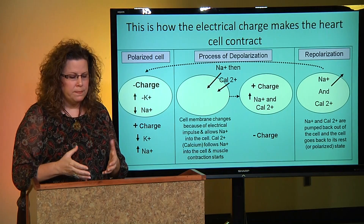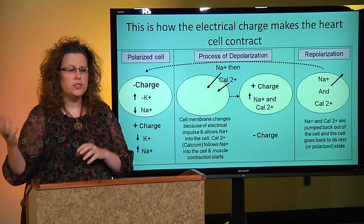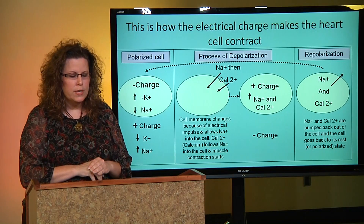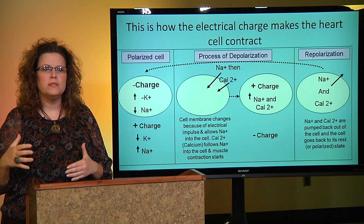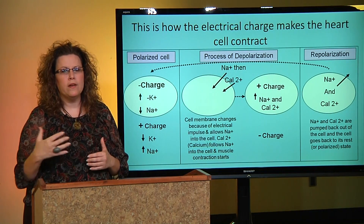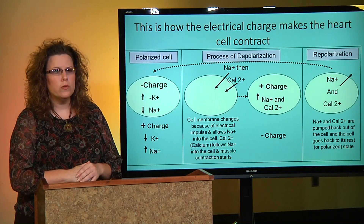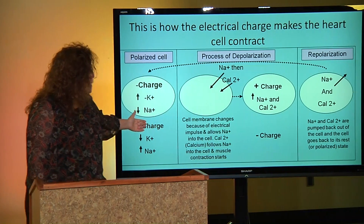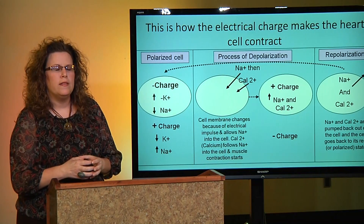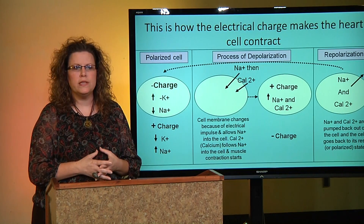When the cell is stimulated, the ions begin to change: sodium comes in, calcium follows, causing the inside of the cell to become a positive charge and the outside to become a negative charge. The last step of the electrical conduction is called repolarization — when the balance is returned to its normal polarized state. Sodium and calcium are pumped back out of the cell, and the cell goes back to its resting, polarized state, with increased potassium and decreased sodium.